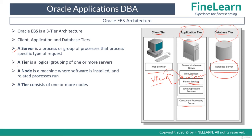Now, what is a tier exactly? A tier is a logical group of one or more servers. For example, on the database tier, there is only one server — the database server. On the application tier, there are many servers: the Oracle HTTP server, form server, concurrent processing server, admin server, managed servers, and different servers. Each of these servers has its own responsibility and processes a specific type of request. A tier is a logical grouping, whereas a server is a physical process which runs on the system or machine where you run that specific software.